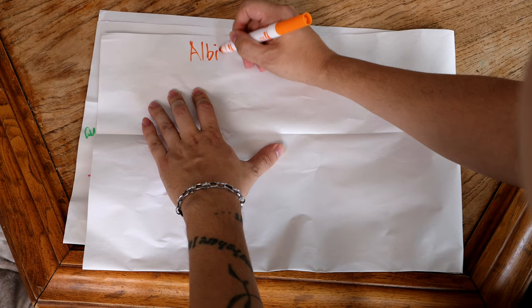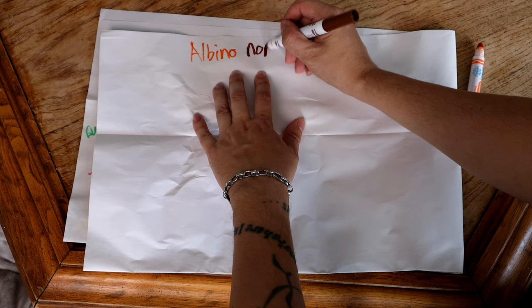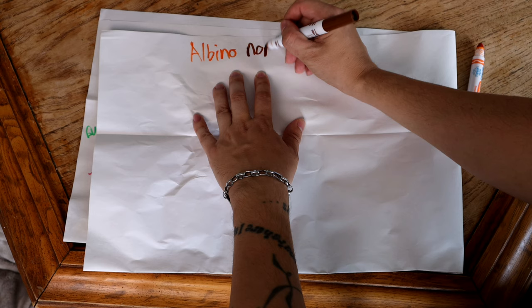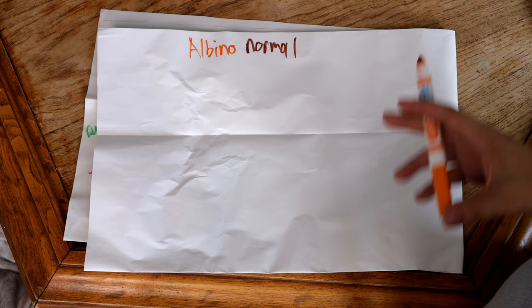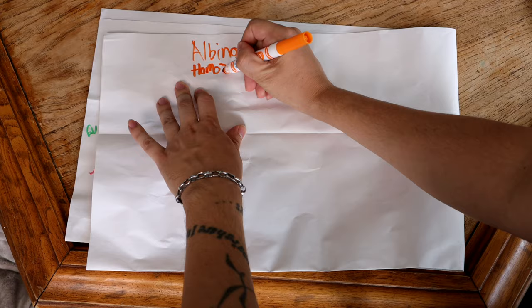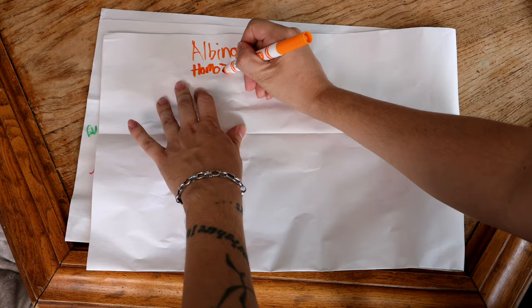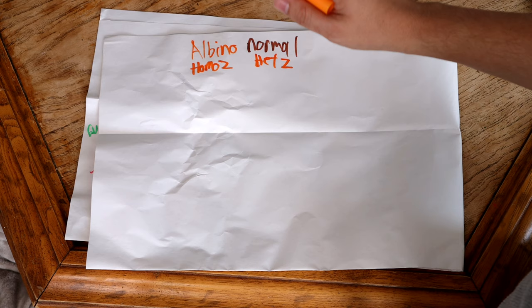We're going to use the example of albino, but aneries work the same way, so do square tails and anything that's recessive. The albinos are going to be orange, the normals are going to be brown, and we're just doing an albino to a normal. There are two forms of any recessive gene: the heterozygous — we're going to call it het Z — and the homozygous.